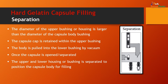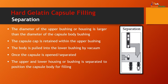In the separation step, the diameter of the upper bushing is larger than the diameter of the capsule body bushing. The capsule cap is retained within the upper bushing, and the body is pulled into the lower bushing by vacuum. Once the capsule is opened or separated, the upper and lower housing are separated to position the capsule body for filling.